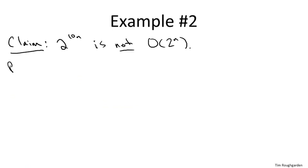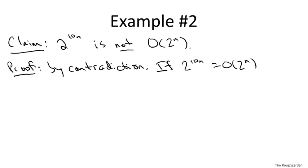So once again, usually the way you prove that one thing is not big O of another is by contradiction. So we're going to assume the contrary, that two to the ten n is in fact big O of two to the n. What would it mean if that were true? Well, by the definition of big O notation, that would mean there are constants c and n not.